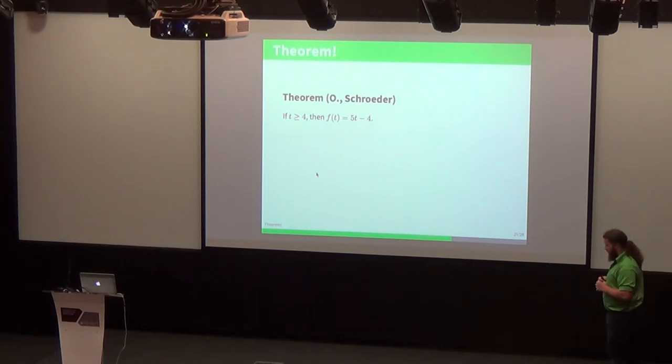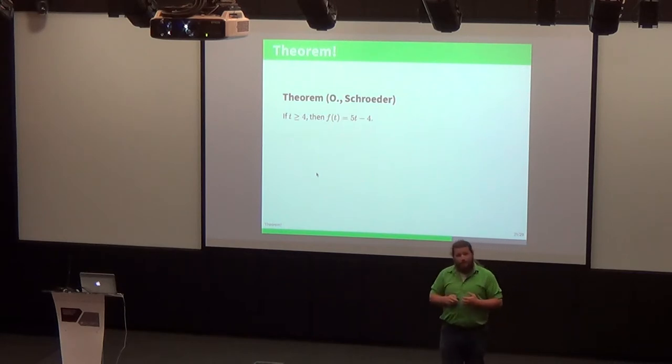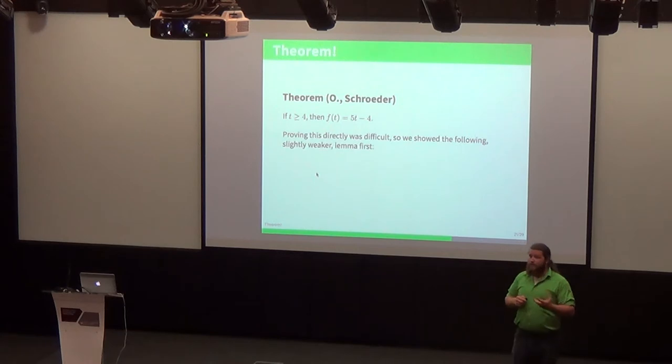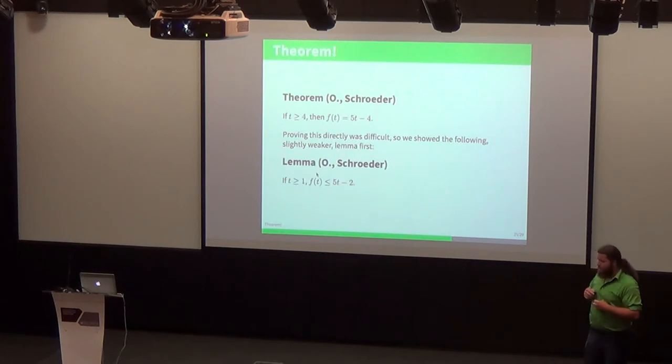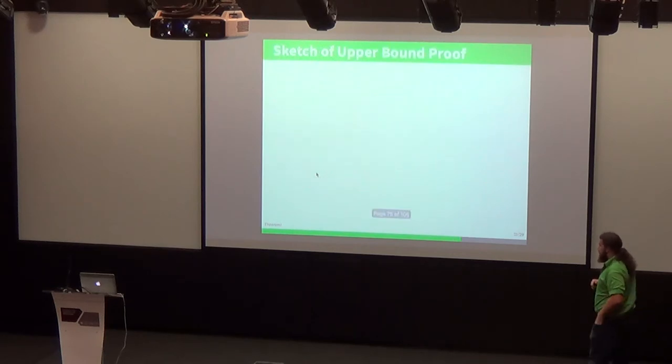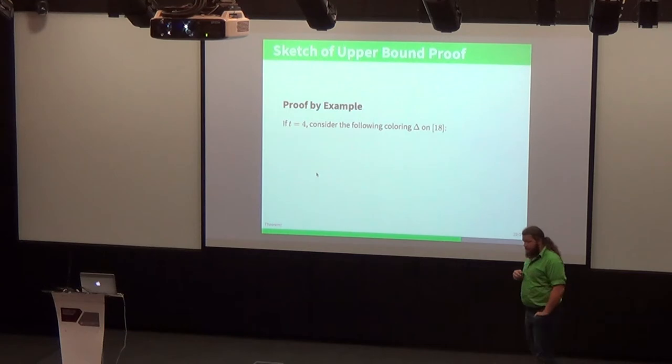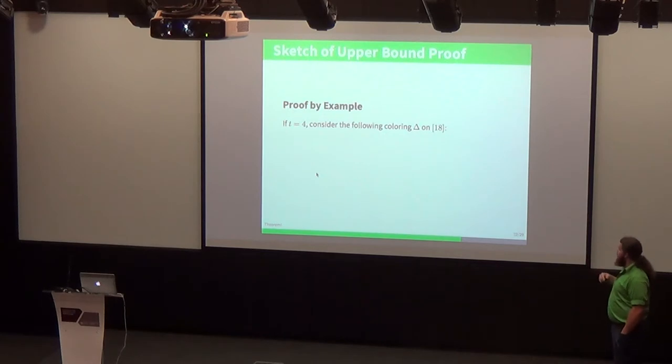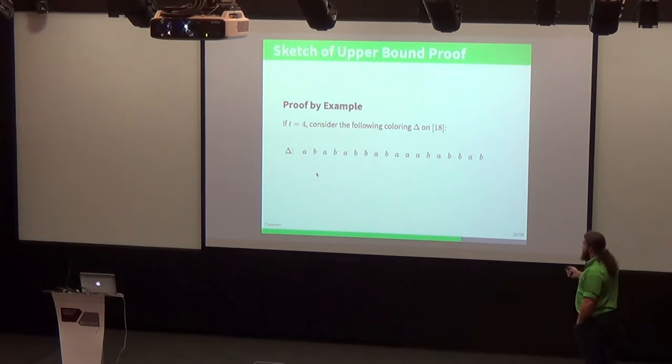So that brings us to our theorem. If t is greater than or equal to 4, our value for f(t) is in fact 5t minus 4. Now proving this directly was very difficult, so we started with a slightly weaker lemma first. We showed that if t was any positive integer, that our value for f(t) was less than or equal to 5t minus 2. I'd like to go through an example of that. If we let t be 4, that means our 5t minus 2 would be 18. This is just an arbitrary coloring here, I just chose this one because it works out nicely. But you could do this with any coloring of 18.